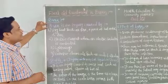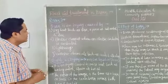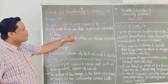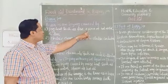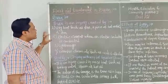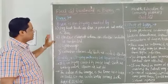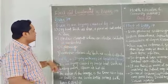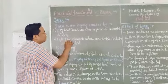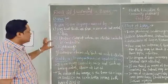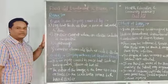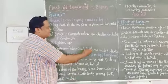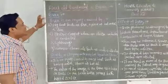Burn is an injury caused by: first, dry heat — such as fire, a piece of hot metal, and sun. Second, burn caused by electric current when an electric conductor is contacted. Third, caused by lightning. Fourth, corrosion chemicals such as acids and mercury. These are the causes of burn.